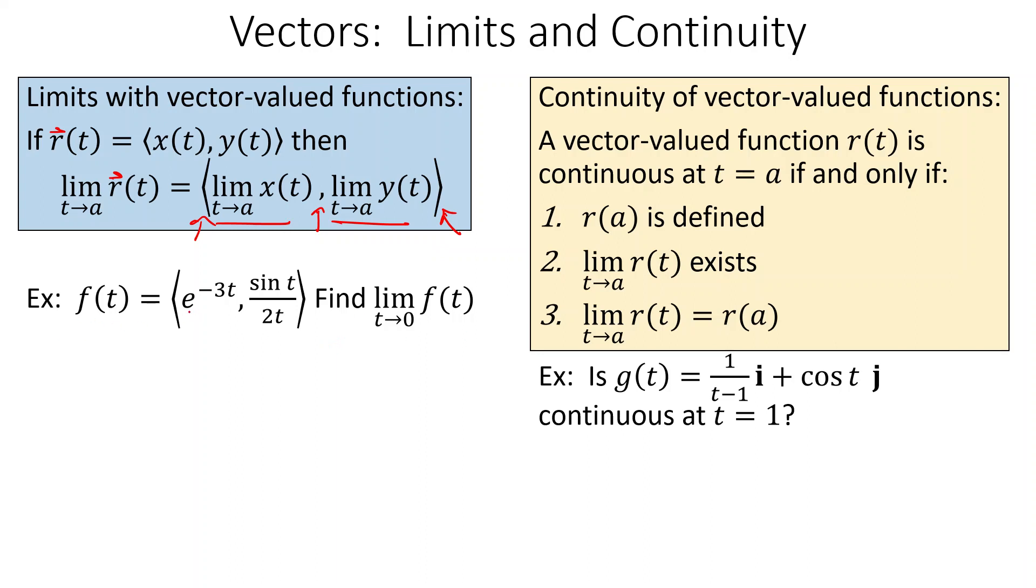All right, so if our function f(t) is e^(-3t), and the y(t) part is sin(t)/(2t), and we want the limit as t goes to zero in f, we just do the limit in each part. So we do the limit as t goes to zero of e^(-3t), which is going to be e^0, which is just one. For the other guy, we take the limit as t goes to zero of sin(t)/(2t). Well, we know that's going to be indeterminate. t goes to zero and sin(t) is just zero. The limit as t goes to zero in 2t is also just zero.